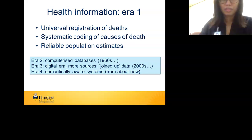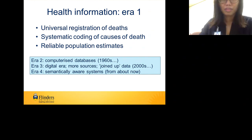Another fundamentally different era can be dated to roughly the mid-1990s to the middle of the first decade of this century — the era in which electronic communication of information basically became digital. At the beginning of that decade only a few percent of transmitted information was in digital form; by the end nearly all of it was. A fourth era, beginning about now, is one in which the systems themselves, rather than being essentially descriptive, are starting to become smart systems.